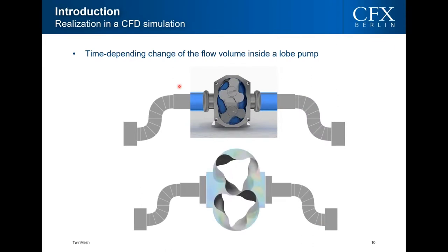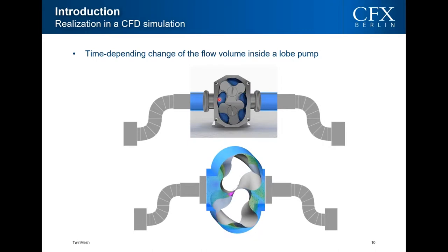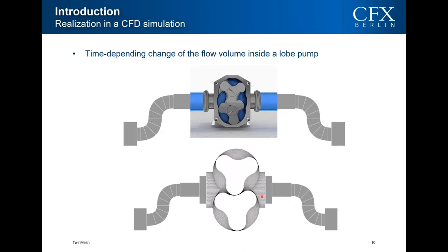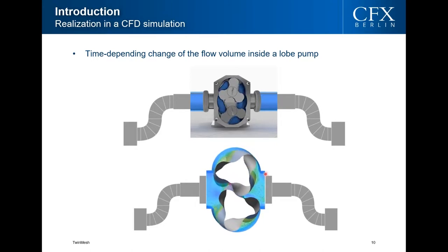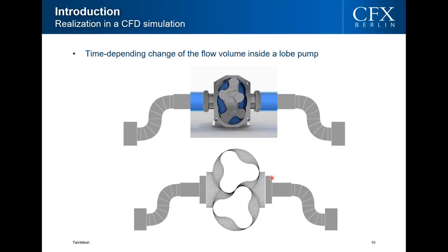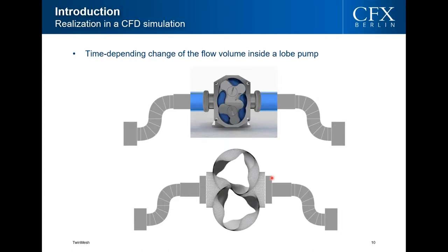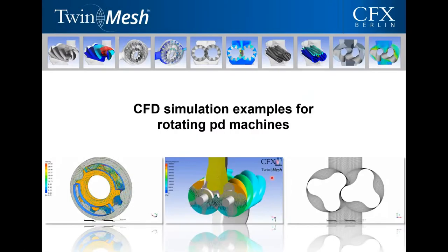In Twin Mesh, we work with a time-dependent change of the fluid volume in the working chamber. Only within this volume do we use our grids, which can be seen in the underlying CFD grid image. This is connected to the stator parts of the pump, where for the static parts you can include as many components as needed — just as in typical CFD cases.